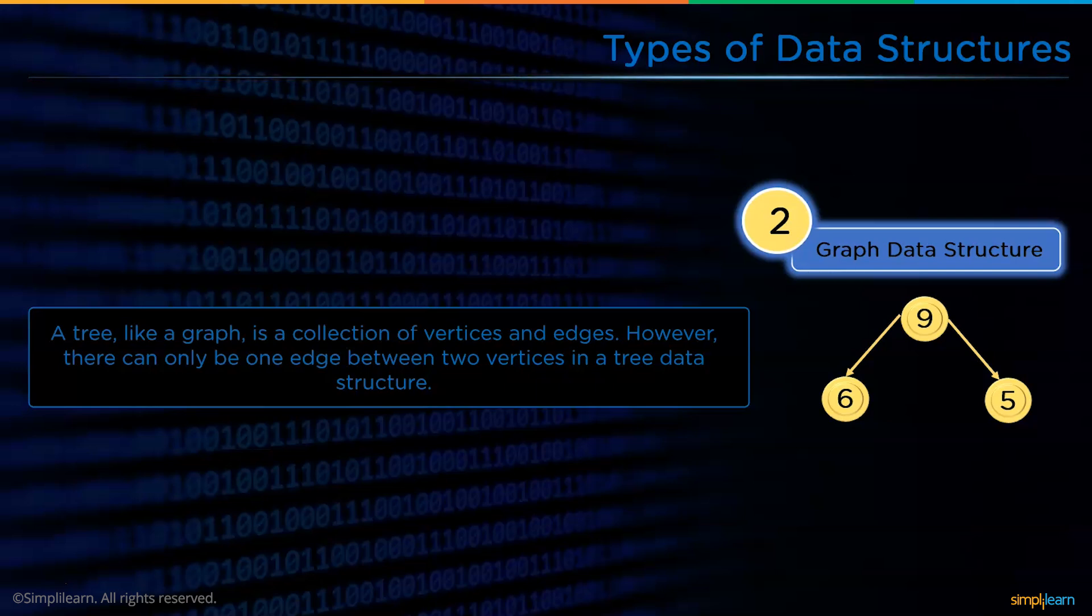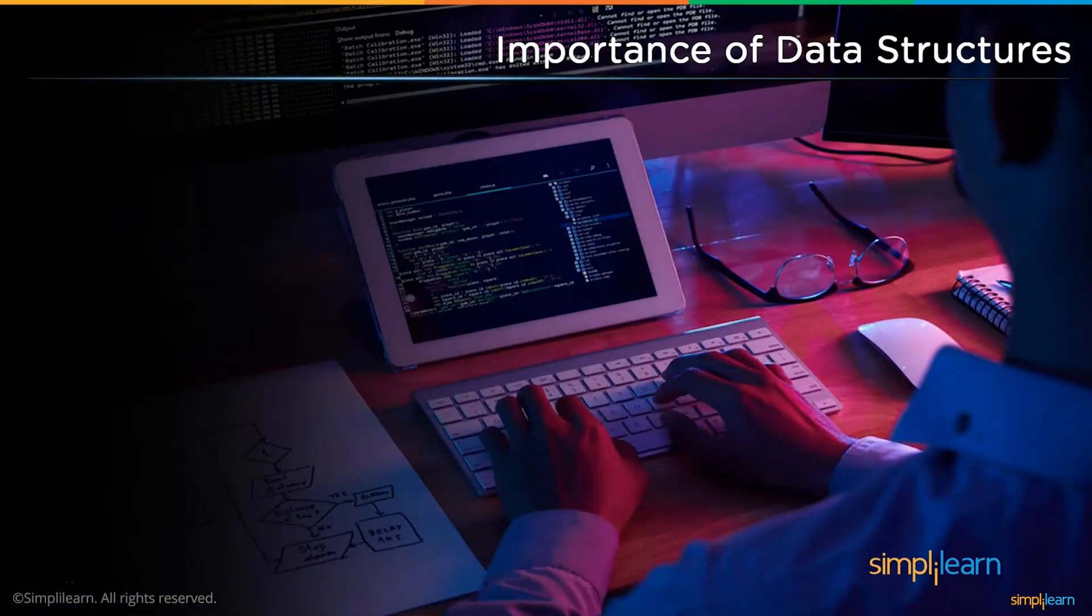It also has vertices and edges. Each vertex in a graph data structure is connected using edges. The only difference between a tree and graph is that in a tree you can have n number of vertices, but in a graph you will have only two vertices.